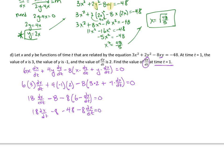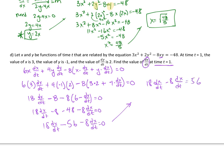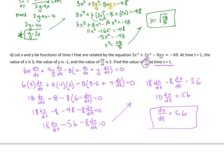So, I end up with 18 dx/dt minus 56 minus 8 dx/dt equals 0. I'll bring the 56 over: 18 dx/dt minus 8 dx/dt equals 56. Combining: 10 dx/dt equals 56, so dx/dt equals 5.6. And there you have it — that would be the value of dx/dt at time t equals 1.